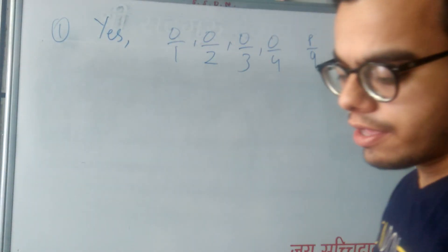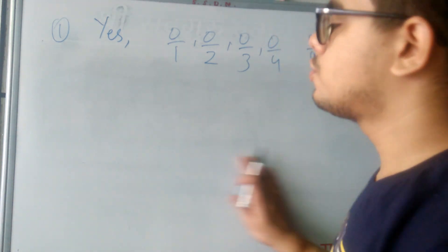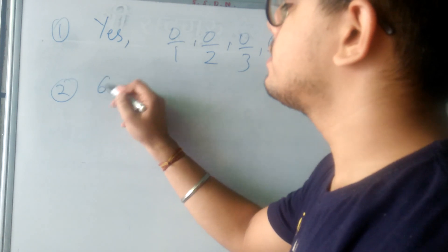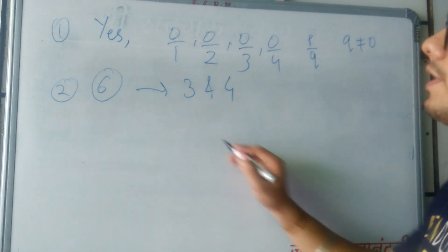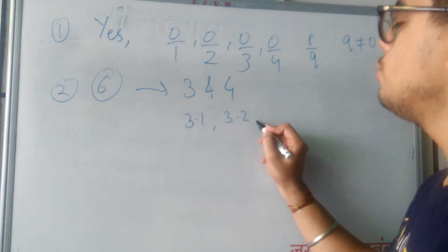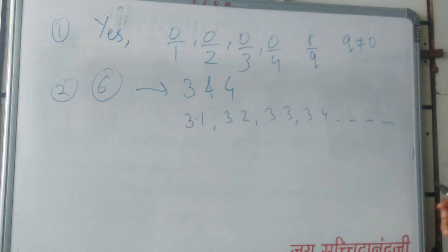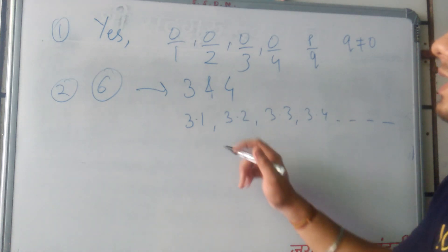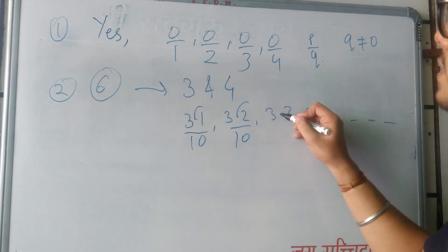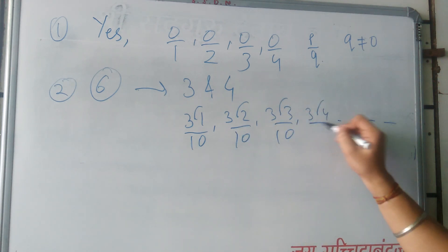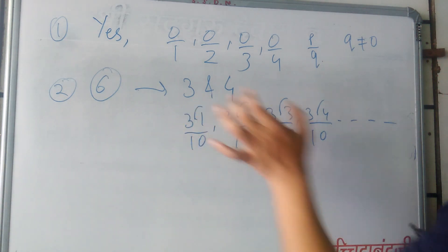The next question is: find 6 rational numbers between 3 and 4. I would be telling you 2 ways to solve this question. We need 6 rational numbers between 3 and 4. We know that we are having 3.1, 3.2, 3.3, 3.4 and so on — different numbers between 3 and 4. So how can 3.4 be represented in the form of P upon Q? Remove the decimal and place a 0, so it is now represented in the form of P upon Q and it lies between 3 and 4.